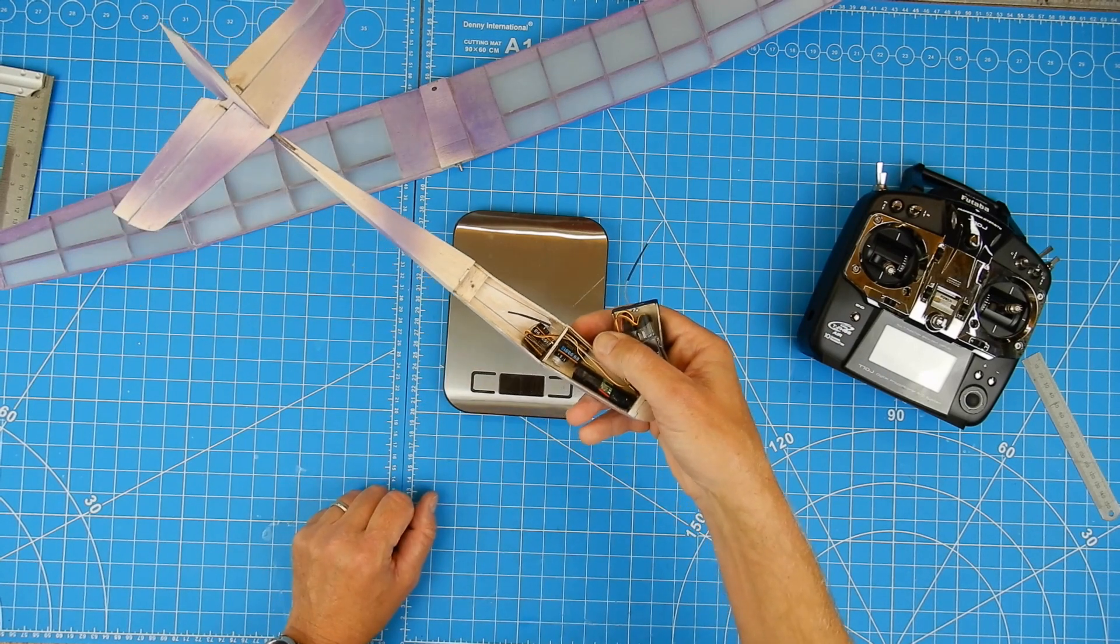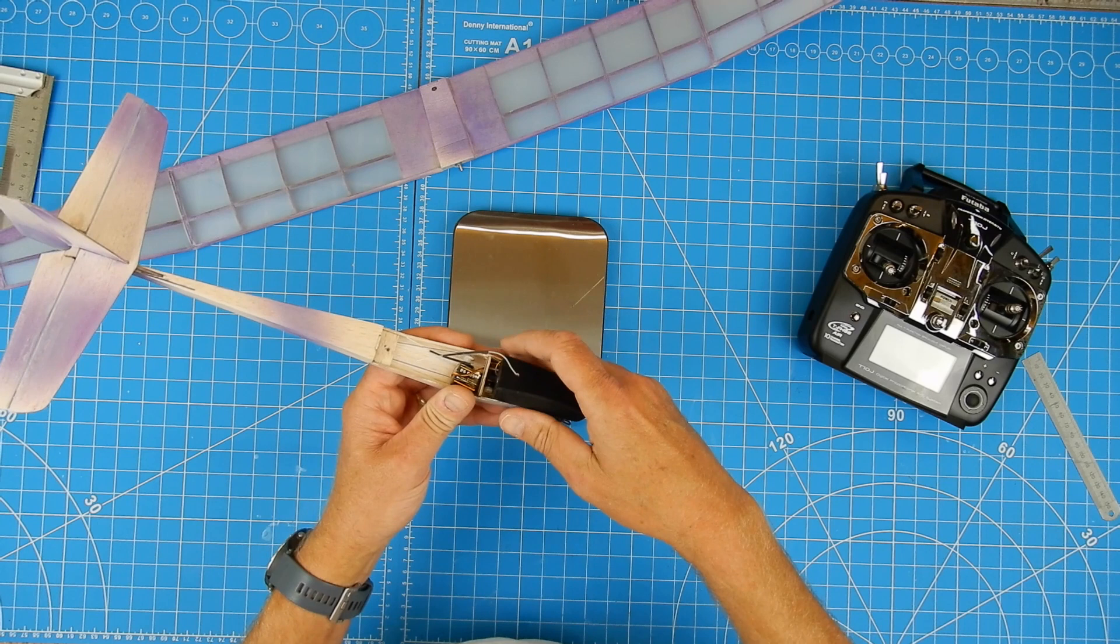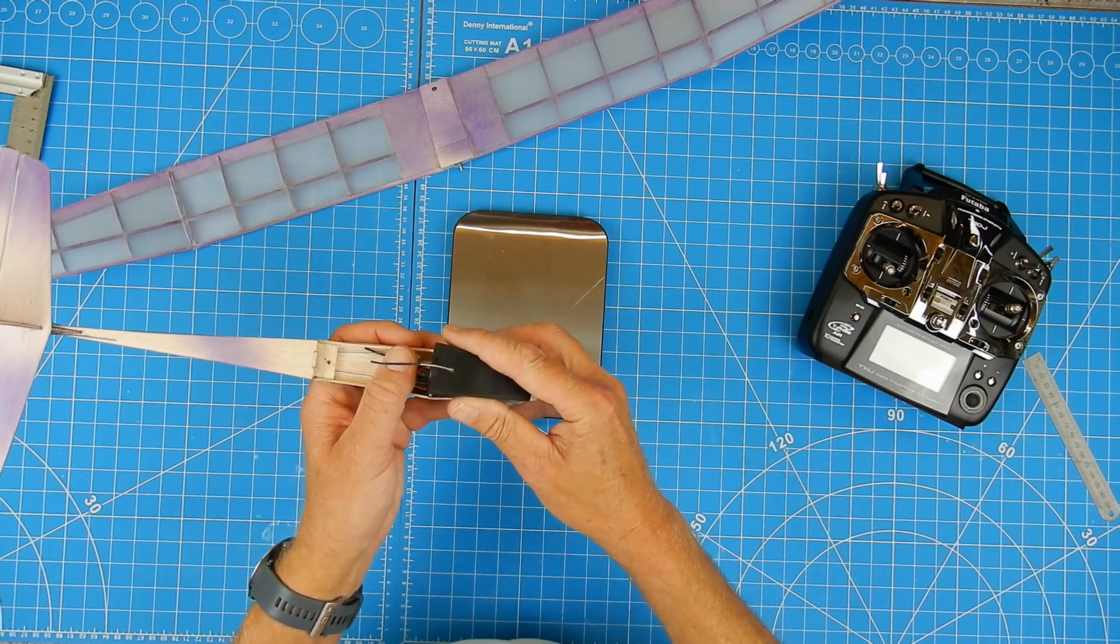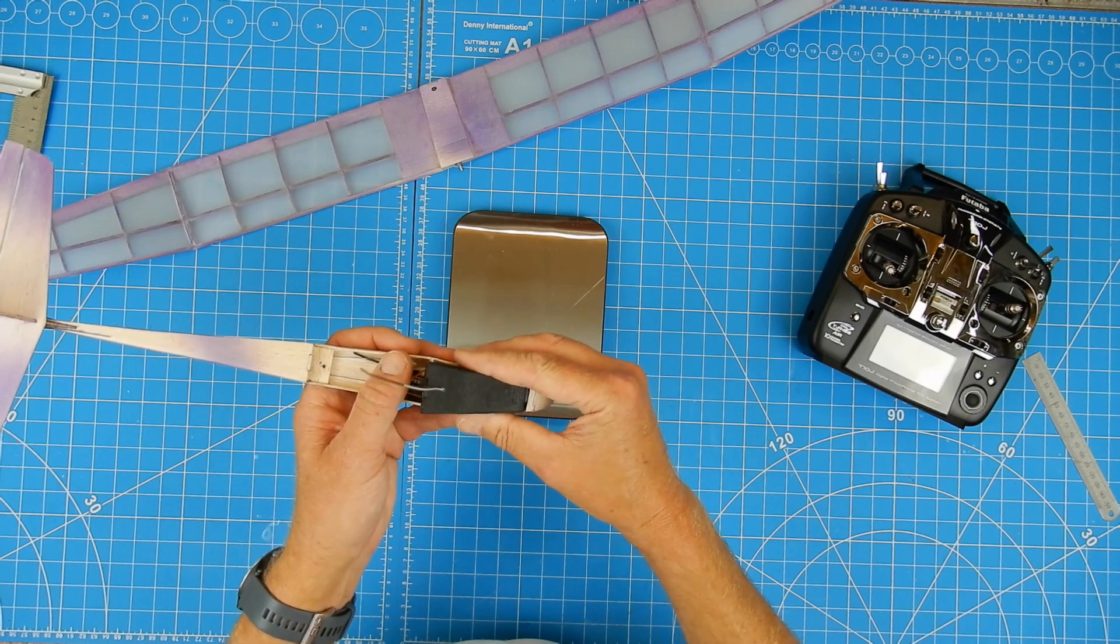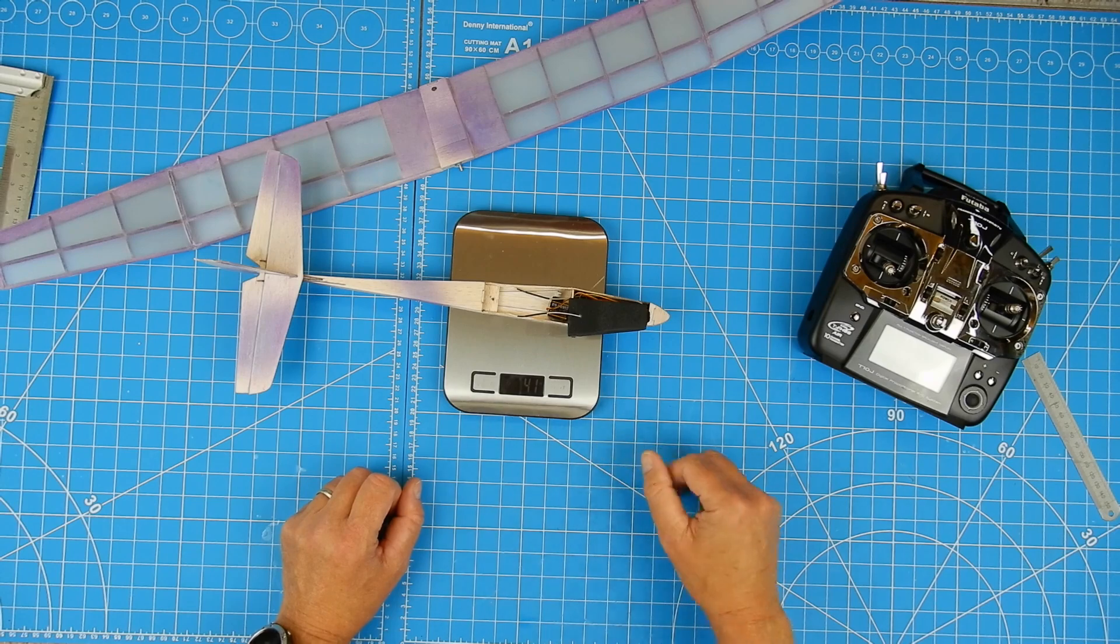Now. I've just got to go and give her a test fly. Oh. With this set up. The C of G is slightly, very very slightly nose heavy. So I'm not worried about that. Because I'm going to be flying this on a slope anyway. So anyway. Let's crack on and let's get the test flight done.